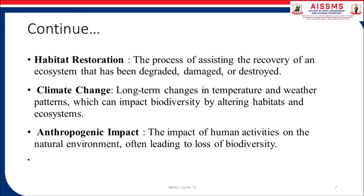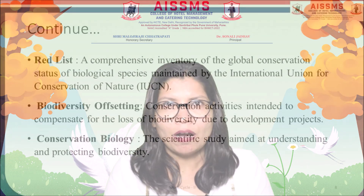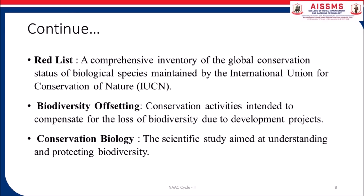Climate change: long-term changes in temperature and weather patterns which can impact biodiversity by altering habitats and ecosystems. Anthropogenic impact: the impact of human activities on the natural environment, often leading to loss of biodiversity. Red List: a comprehensive inventory of the global conservation status of biological species maintained by the International Union for Conservation of Nature, known as IUCN.